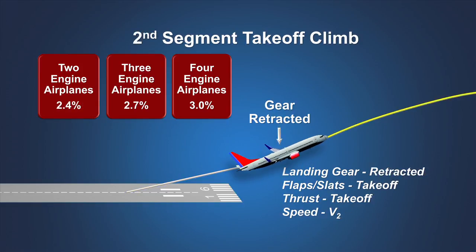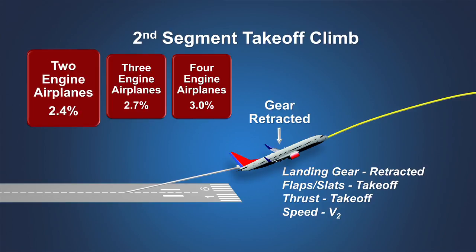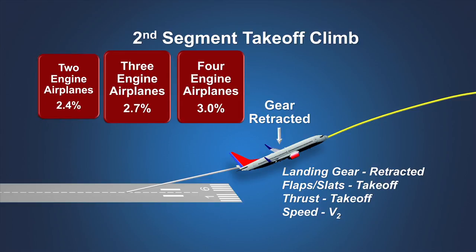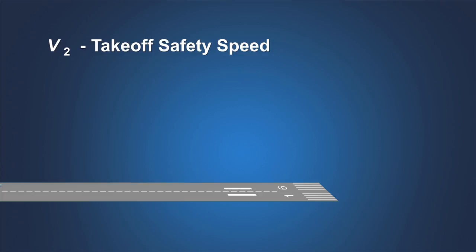Additional climb performance is required for airplanes with more than two engines. The second segment begins once the landing gear is fully retracted. The airplane must once again demonstrate a minimum climb gradient in still air with one engine inoperative. For a turbine-powered airplane with two engines, that minimum climb gradient is 2.4%, which is determined at the point where the landing gear is fully retracted. Additional climb performance is required for airplanes with more than two engines. The first and second segment climb is based on flying V2 speed.